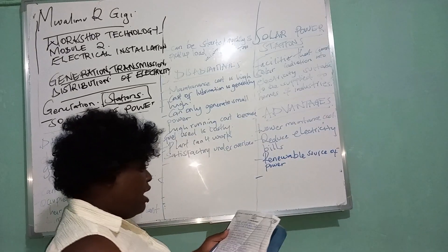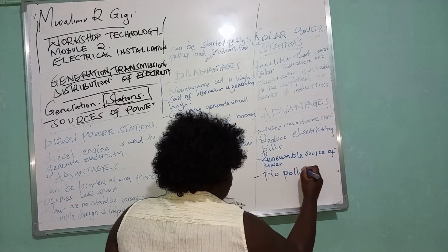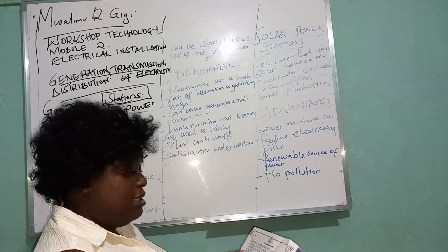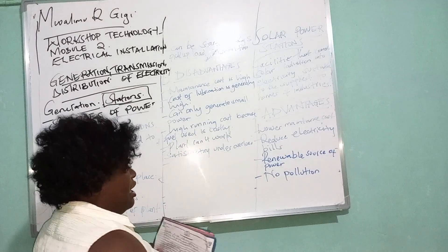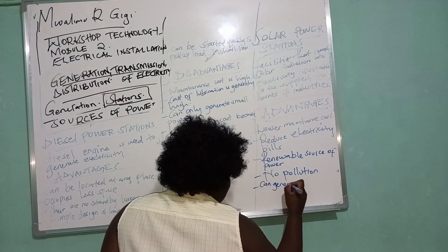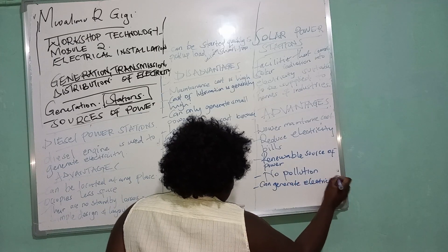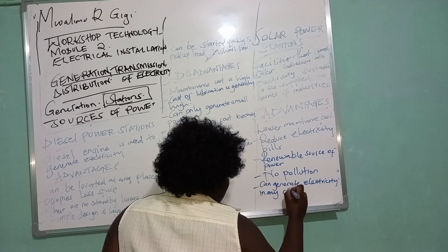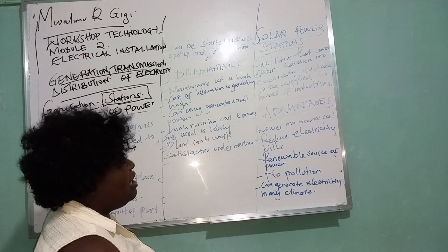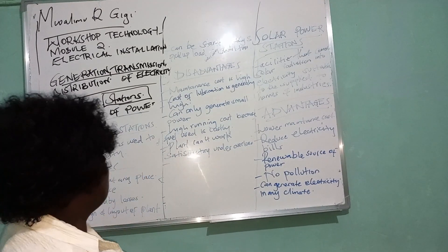It has no pollution, and lastly it can generate electricity in any climate. Those are some of the advantages of solar power stations. Now let's look at the disadvantages.